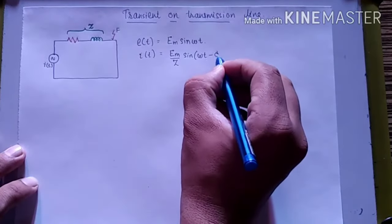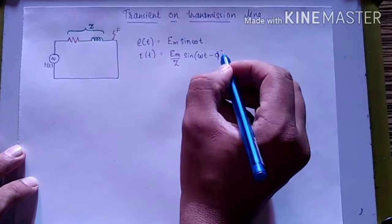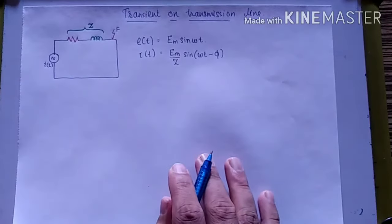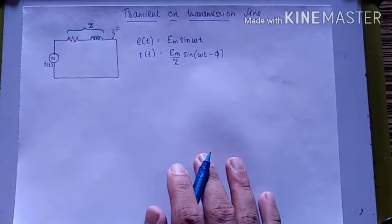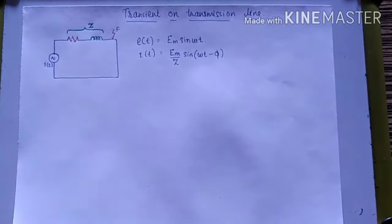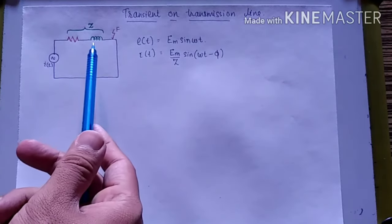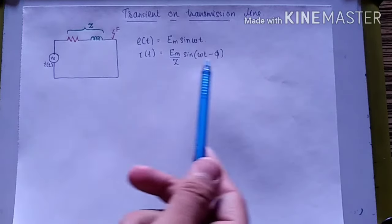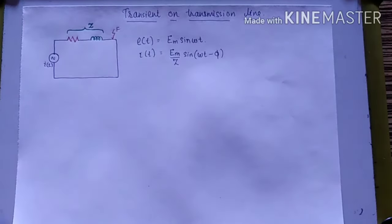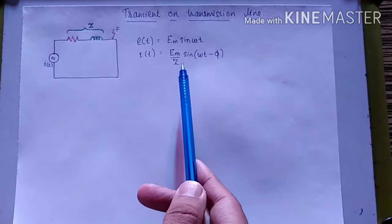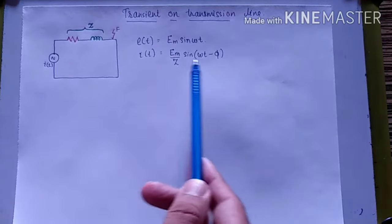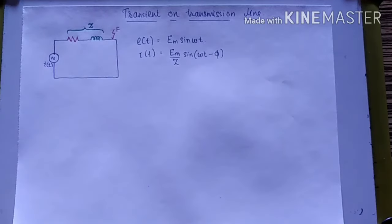Here φ is the angle of the inductance. We know that the angle of the inductance is given as φ, so we have written φ as the angle of the inductance.